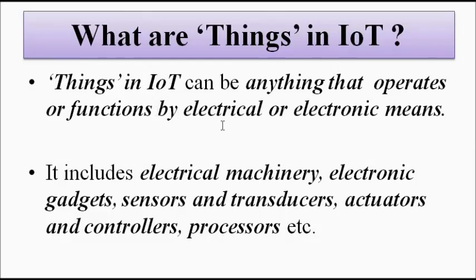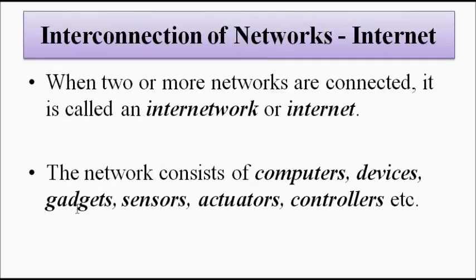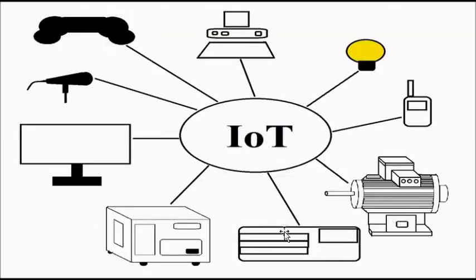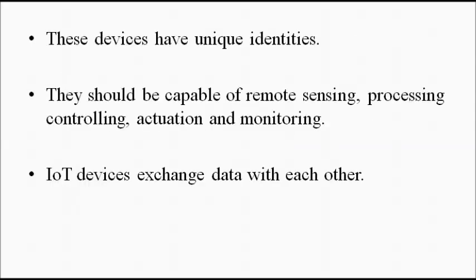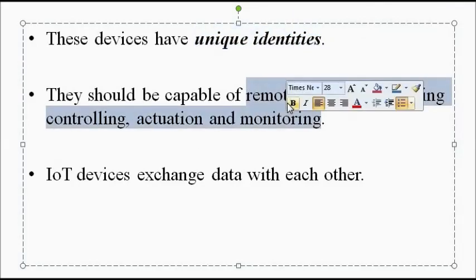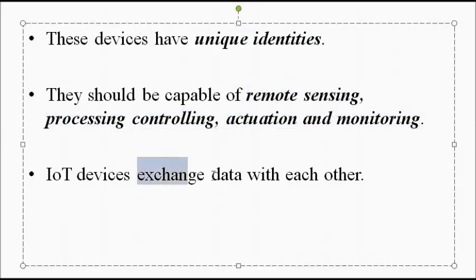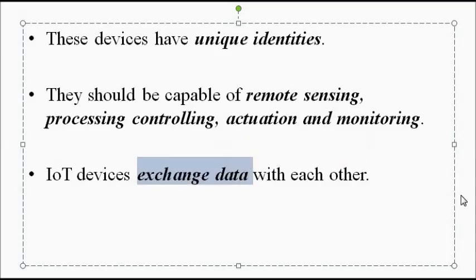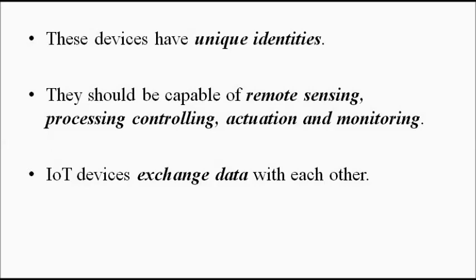The important thing is that the final output should be in electrical form, and all these things when connected to each other so that there can be sharing of information between one device and another — that whole system is called Internet of Things, where everything is connected for the purpose of sharing of information. All these devices that are part of the IoT system have unique identities and are basically used for sensing, actuation, monitoring, controlling, and they exchange data with each other.